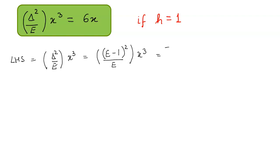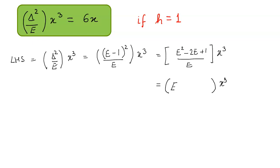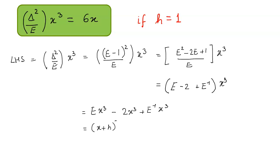This can be further simplified: E minus 1 whole squared can be written as E squared minus 2E plus 1 upon E, applied to x cubed. On further simplification this gives E minus 2 plus E inverse. Now we open up the brackets and write the expression. This gives x plus h whole cubed minus 2x cubed plus x minus h whole cubed.